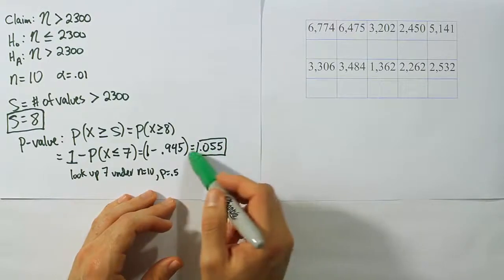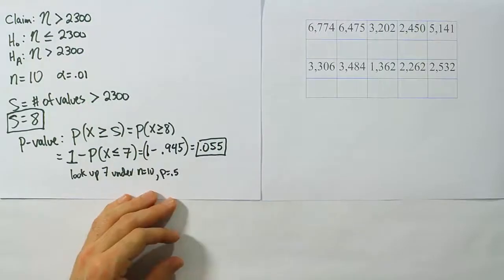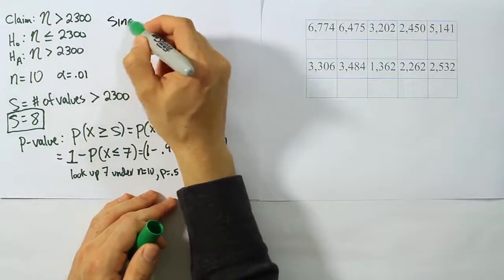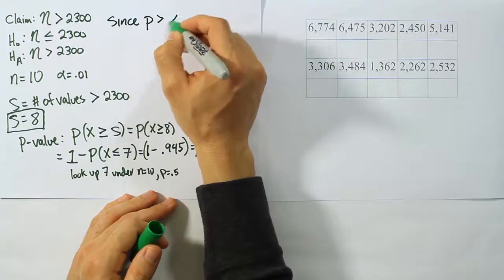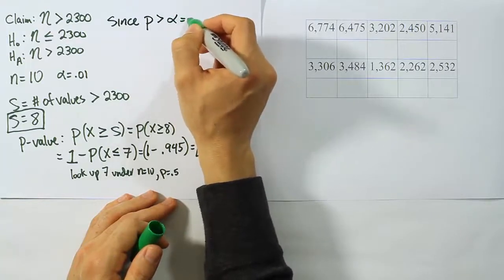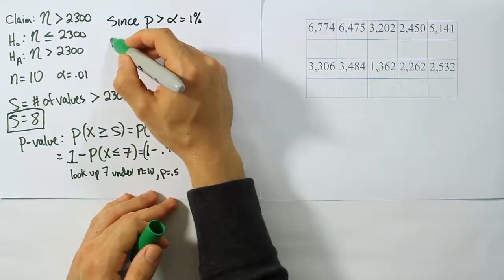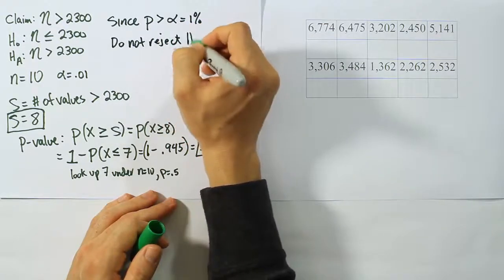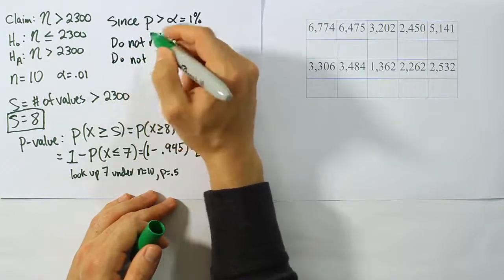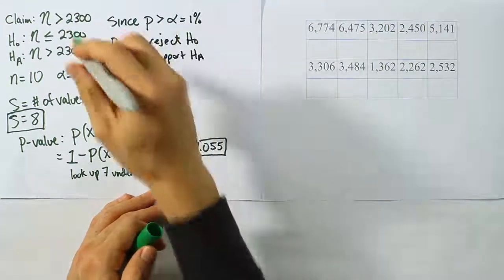So it seems like this should be enough to reject the null hypothesis, but then when we look at alpha we see that no, it's one percent alpha. So what we're going to say here is that since the p-value is greater than alpha, which is only one percent, and the p-value is five and a half percent, we do not reject H0, we do not reject H0, and therefore we do not support HA. So we do not support the claim.